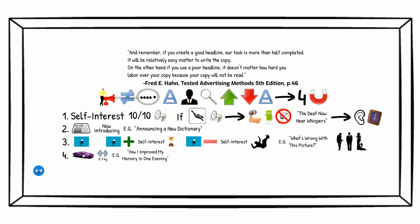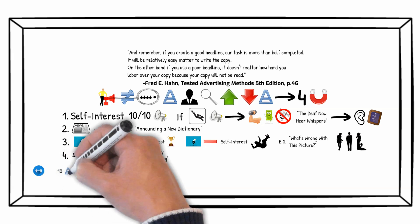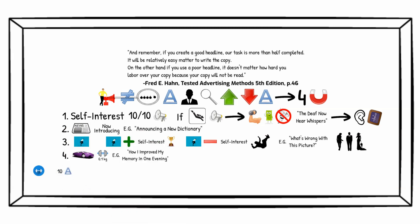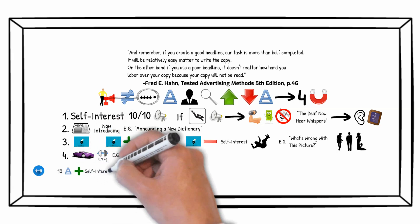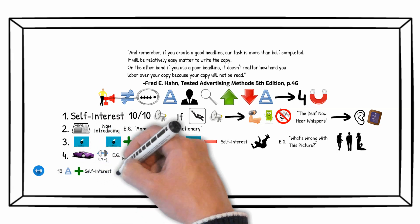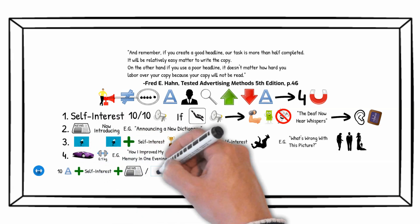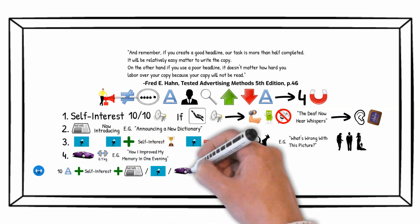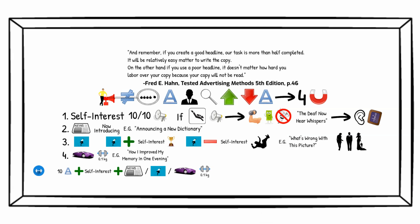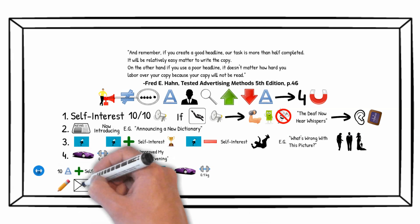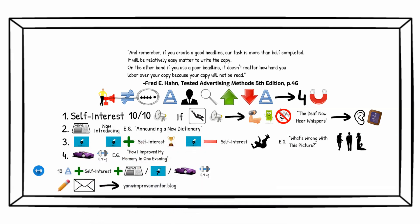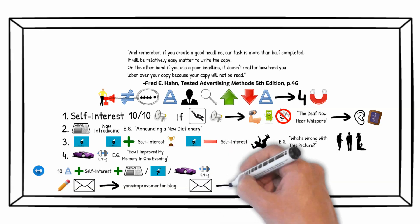Exercise: Write 10 possible headlines for your next content piece. Include self-interest and at least one more appeal in each headline. You may then send those to my email and, who knows, maybe even get some feedback.